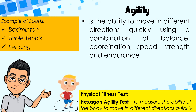Agility is the ability to move in different directions quickly, using a combination of balance, coordination, speed, strength, and endurance. Examples of sports involved include badminton, table tennis, and fencing. For the physical fitness test, we will perform the hexagon agility test, which measures the ability of the body to move in different directions quickly.